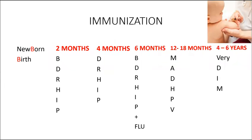I'm going to show you an easy way to remember immunization schedules. So the first thing I'm going to write is: newborn, two months, four months, six months, 12 to 18 months, and four to six years. This is an easy way to remember when each of the vaccines are due.